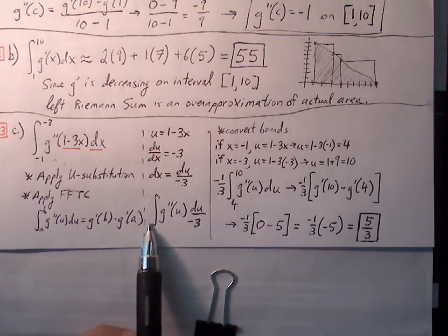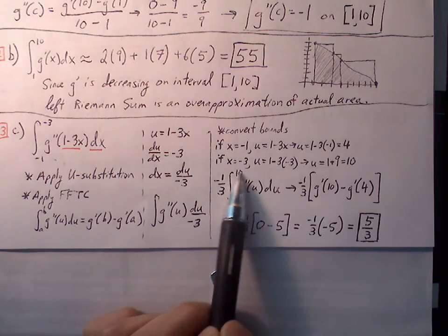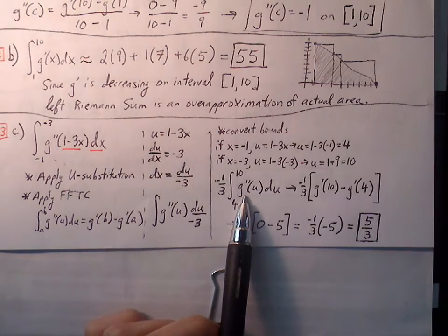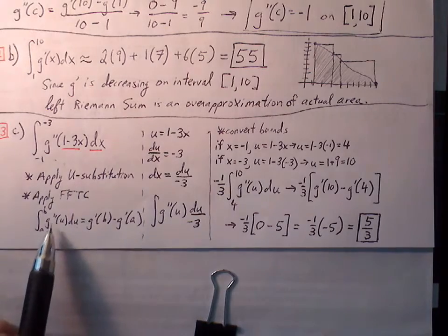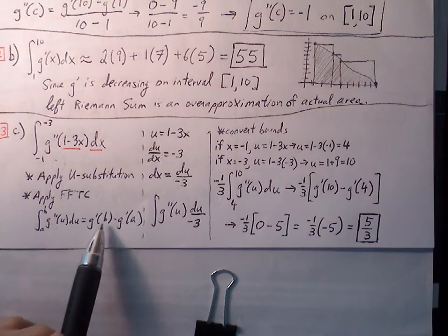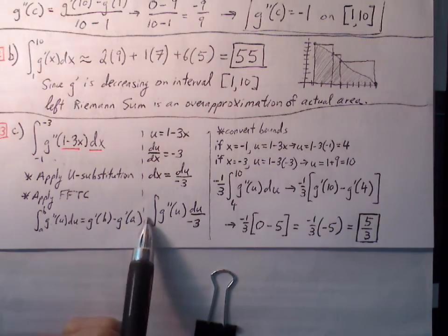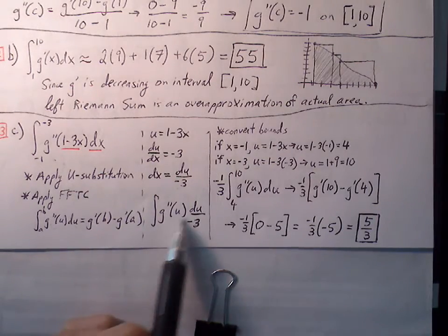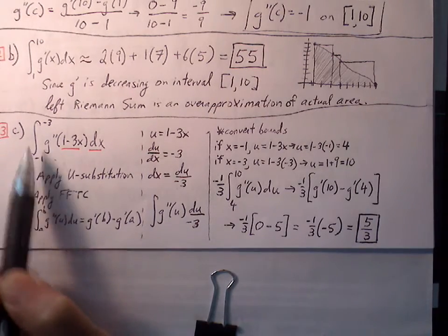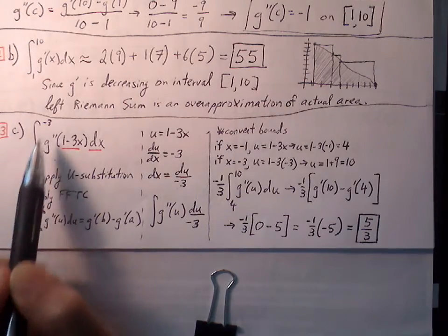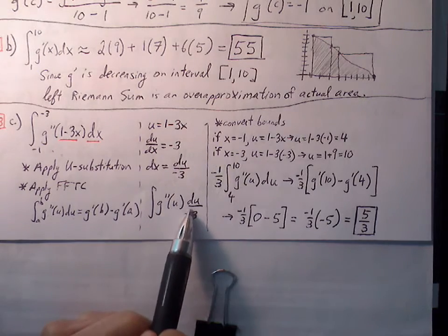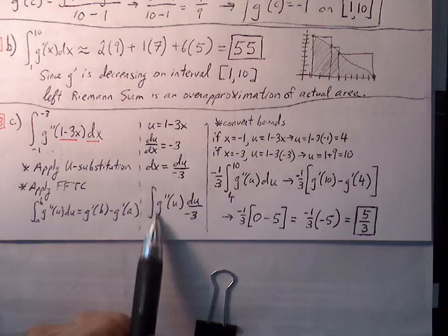We can pull the negative three out in front as negative one third. Now we work toward using the First Fundamental Theorem of Calculus: the antiderivative of G double prime of u pushes up one level to G prime. We can then plug in our upper and lower bounds. But we must be aware that the original bounds are in terms of x, not u, so we need to convert them.